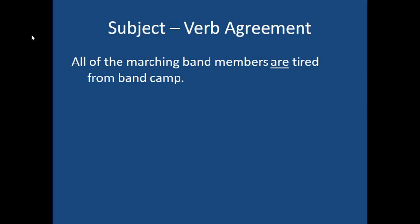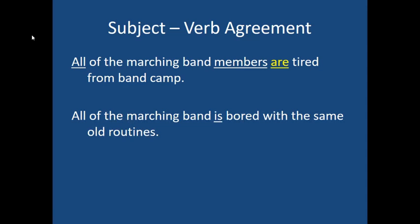So if I said 'all the marching band members are tired from band camp,' we get to use the word 'are' because even though the subject is 'all,' I can't tell whether 'all' is singular or plural unless I consider the prep phrase, which says 'members.' And because the word 'members' is plural, that makes the word 'all' plural, and therefore I choose the plural verb.